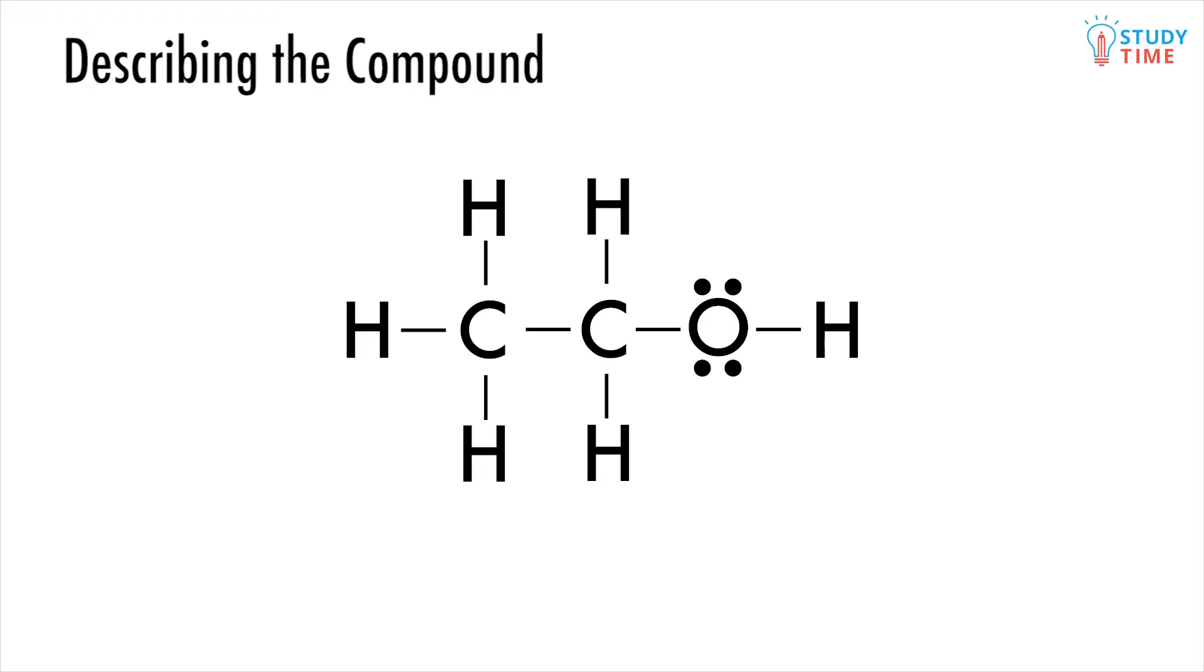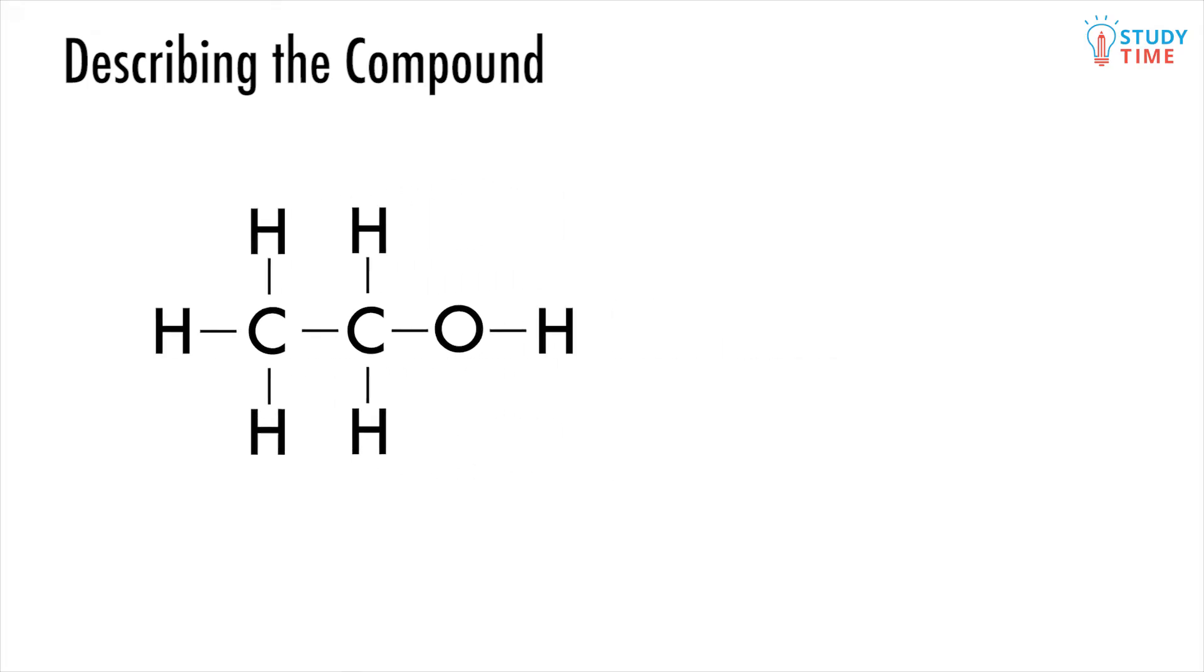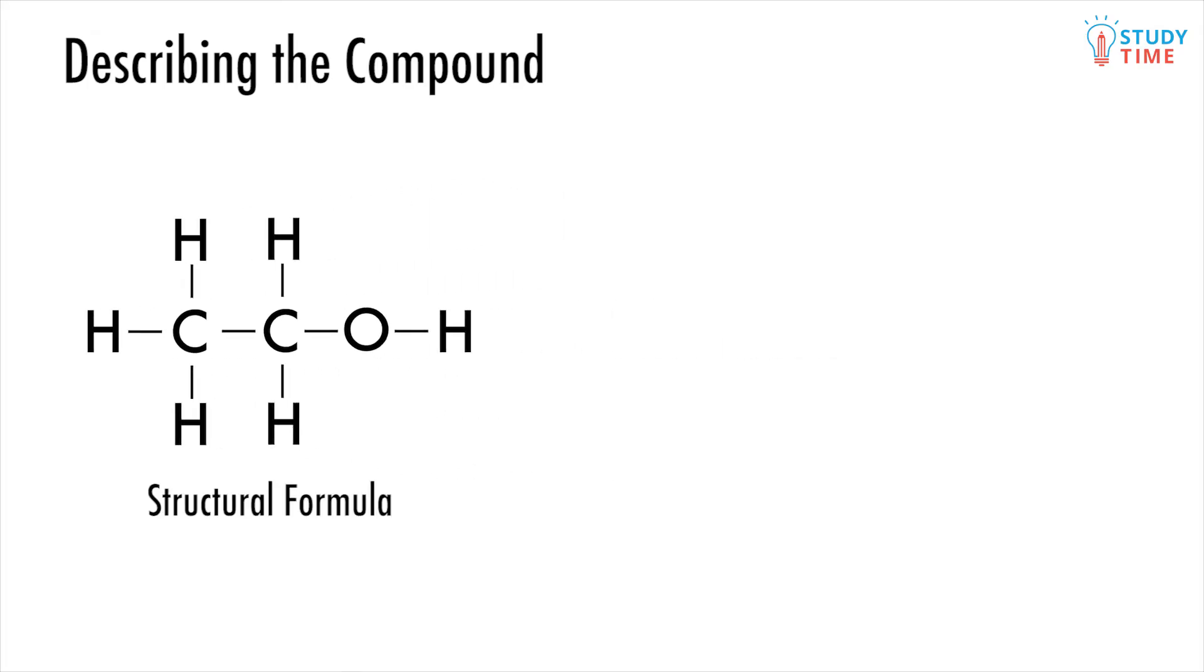Now if you take a Lewis diagram without showing the non-bonding pairs, you end up with a diagram called a structural formula. The one for ethanol, a very popular organic molecule, looks like this.